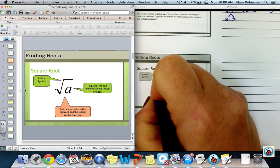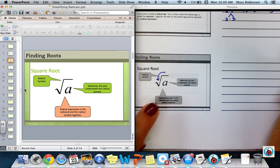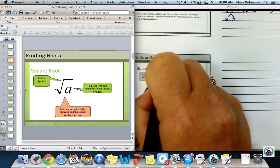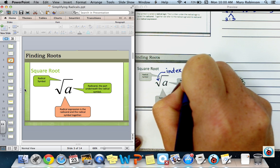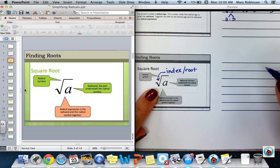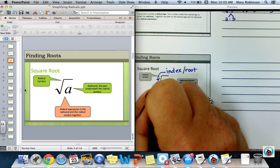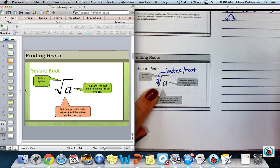One thing I want to add in here is that this is known as the index or the root that we're taking. When we look at this, we say square root because it is understood to be 2. It will always be 2 unless it's stated otherwise.